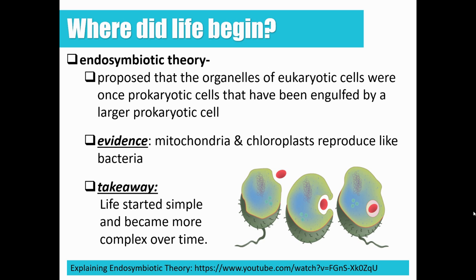What evidence supports the endosymbiotic theory? During the mid-1900s, scientists discovered that both the mitochondria and the chloroplast inside plant cells had their own DNA, which was different from the rest of the cell's DNA. When scientists looked closer at the genes in the mitochondria and chloroplast, they found the genes were more like those from prokaryotes. This tells us that organelles are more closely related to prokaryotes, and the takeaway is that life started very simple as prokaryotic cells and then over time became increasingly more complex.